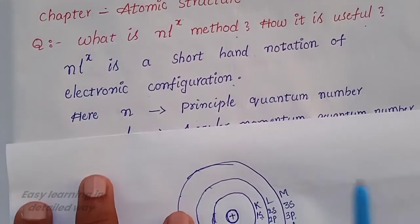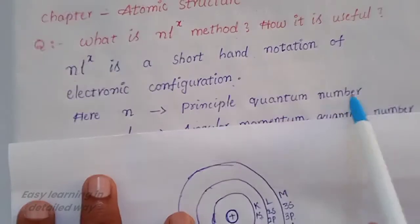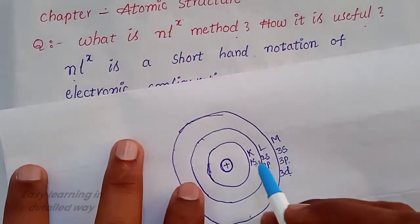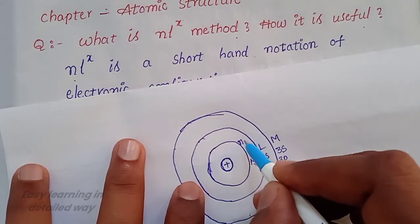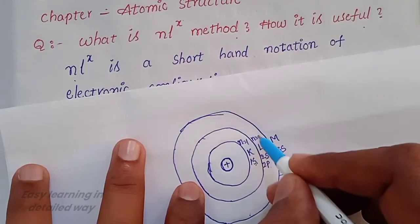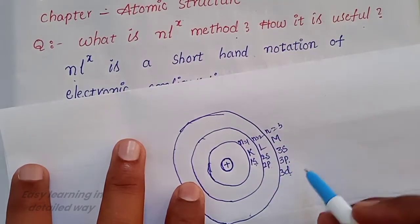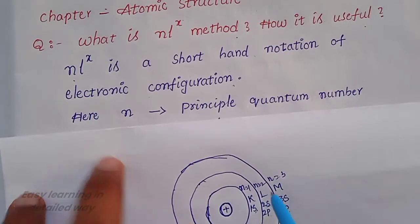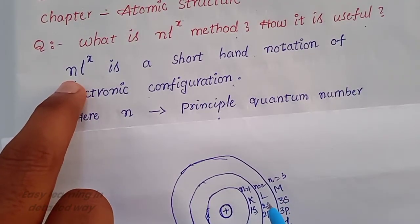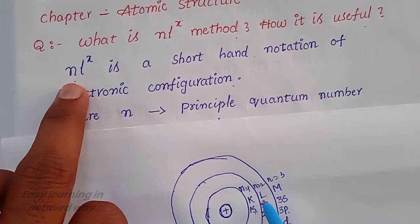Here, what is N? N stands for principal quantum number. Each principal quantum number corresponds to a shell: K is 1, L is 2, M is 3. For example, if an electron belongs to the L shell, that is the second shell, then N equals 2.